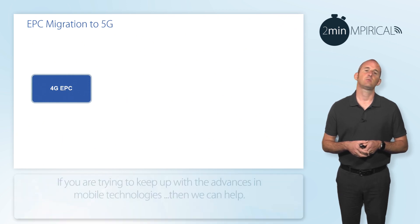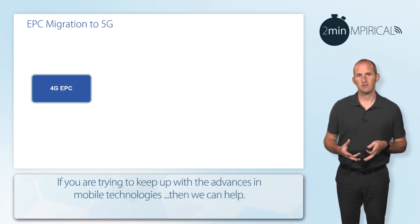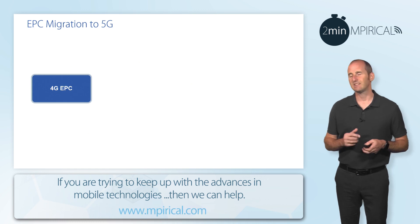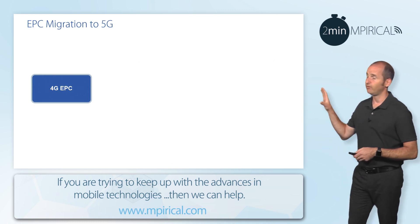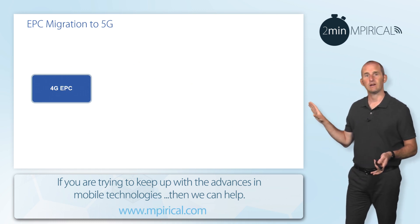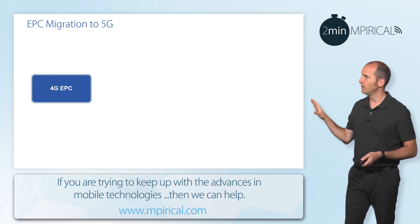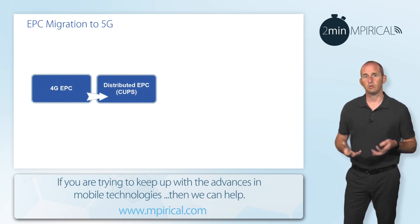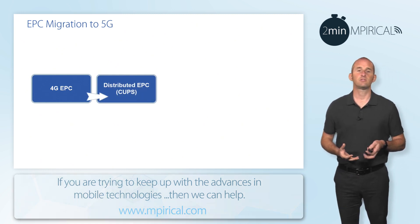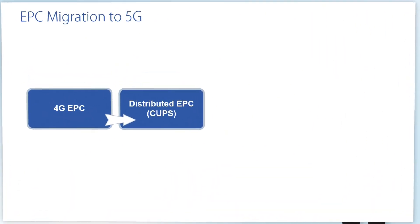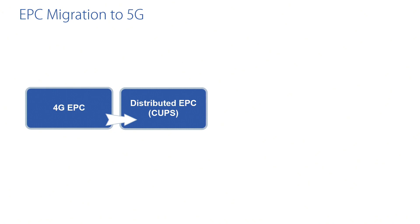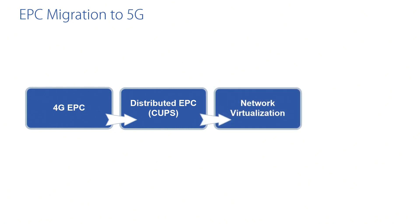So that service provider needs a migration path. At the start of that migration path, we have the 4G evolved packet core. The next move would be to deploy CUPS — control and user plane separation of EPC nodes. Coupled with that can be network virtualisation, and the two are not mutually exclusive.